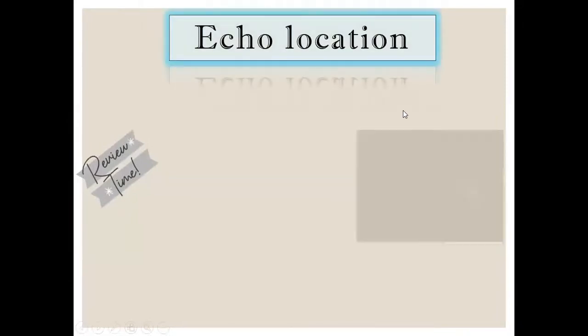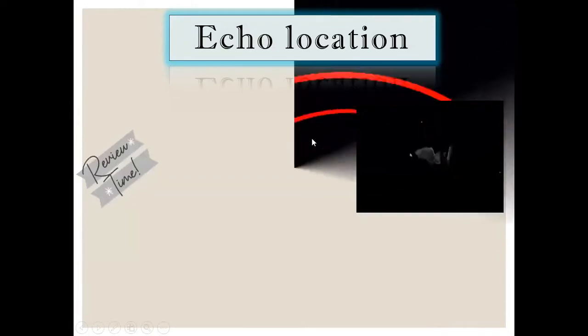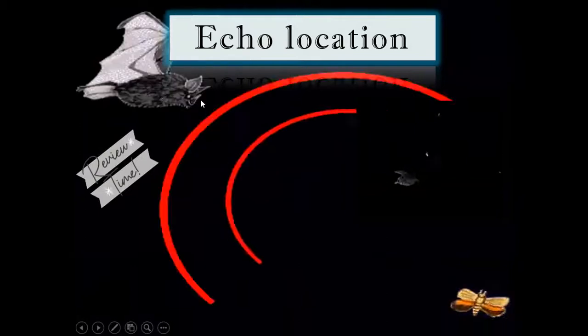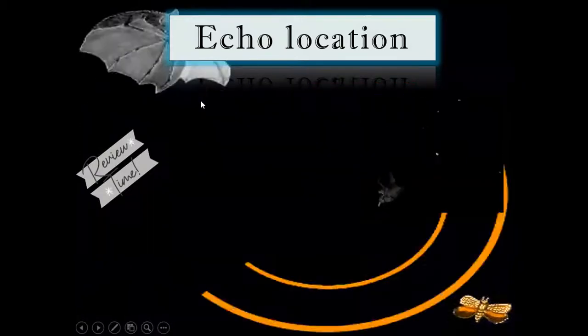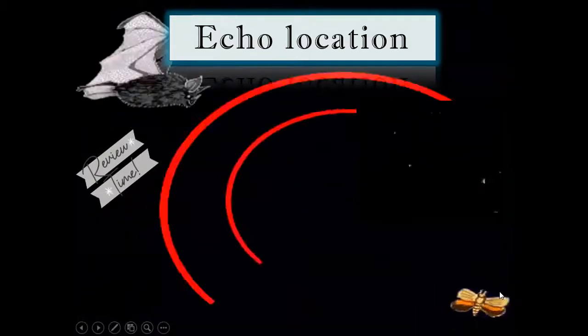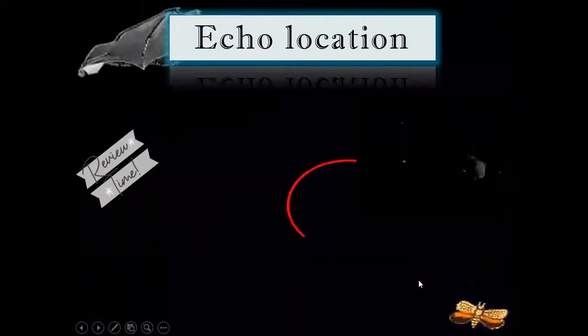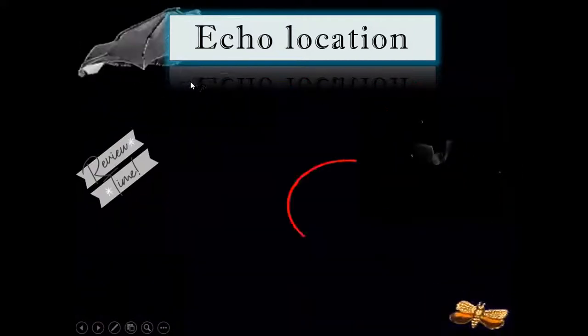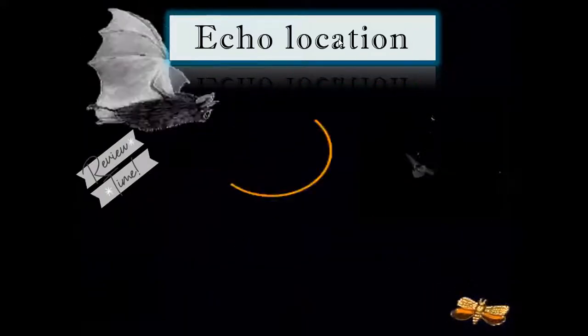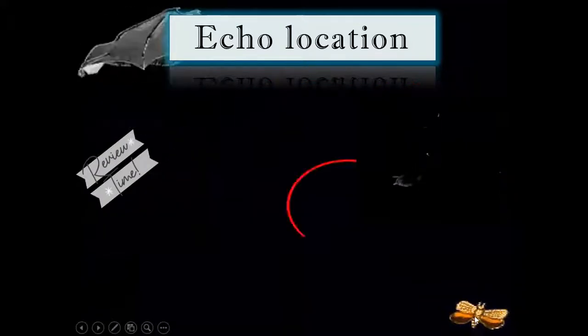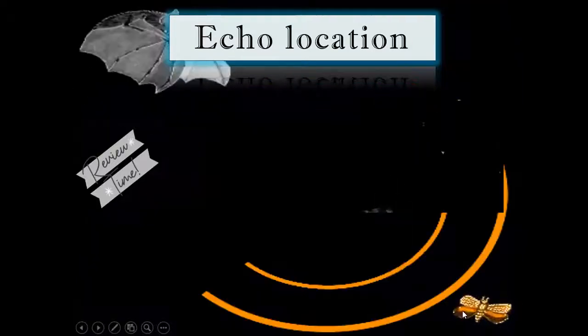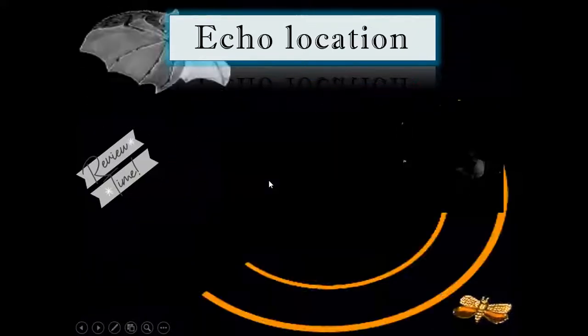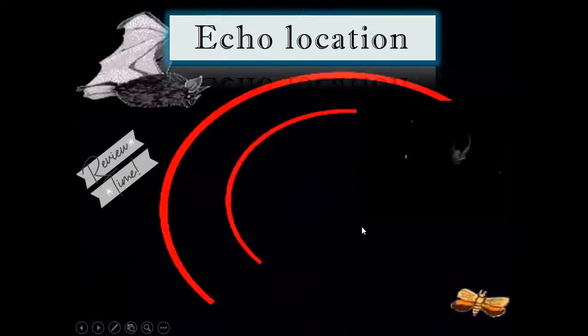And what about echo location, students? Bats make high-pitched sounds and use their ears to pick up the echoes from the objects around them. And then they are making the sound. It will be struck by any object that is near to it, especially flying insects. They strike and come back to the bats, reflected back to the bat that has found the location of the insect, how big it is, how far it is. So that is echo location. Bats use echo location to find their way.